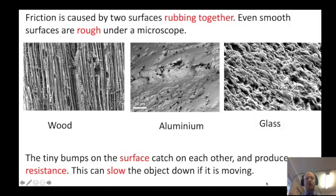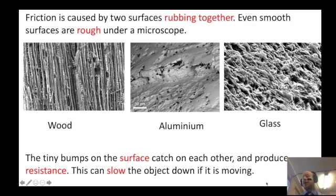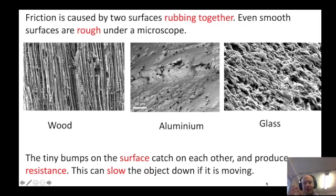Whenever you have two surfaces that rub together, even very smooth surfaces are somewhat rough if we look at them under a microscope. Here I've got pictures of wood, aluminium, and glass — a lot of substances that I would consider to be quite smooth, not rough at all. But you can see there are loads of pits, dips, valleys, and mountains if we look really closely.